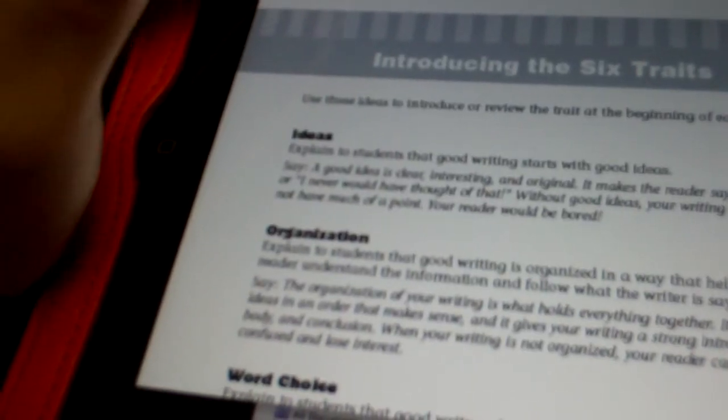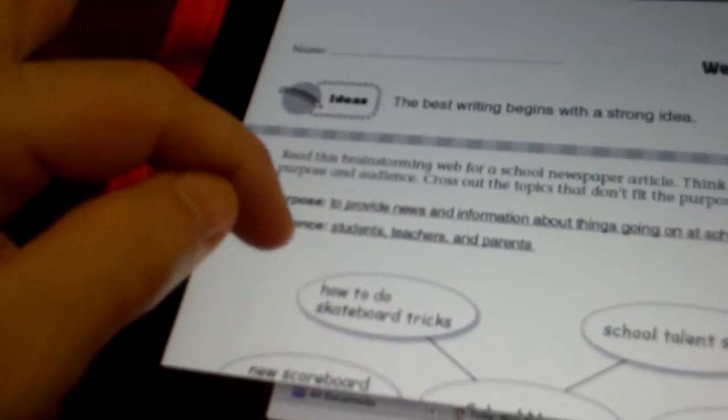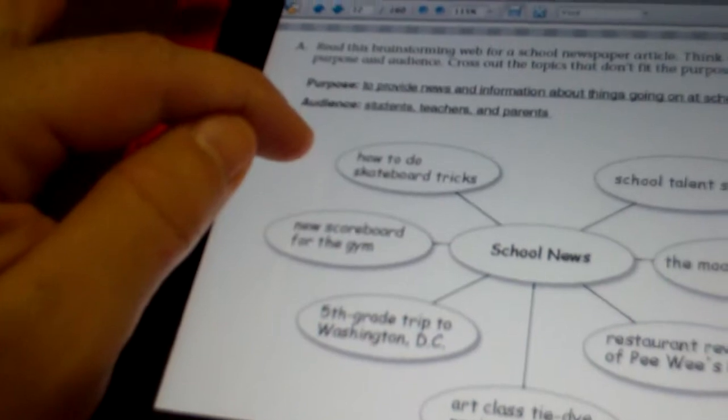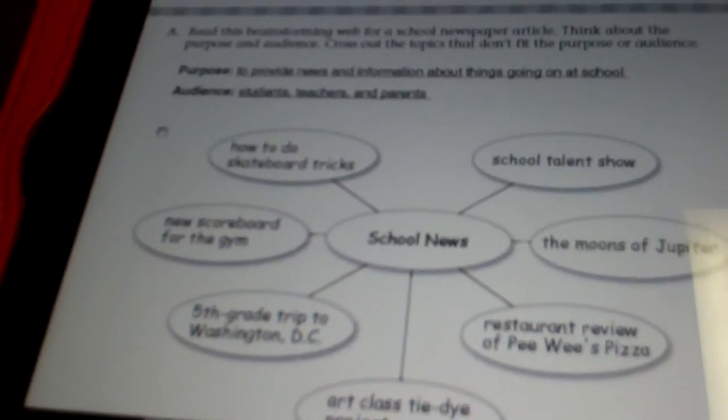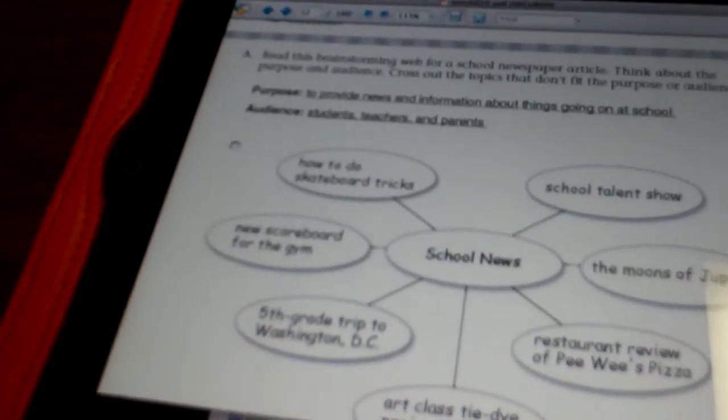If you were going to do an e-book in this classroom you could do it yourself but now you're walking around the room speaking to the class and with the class while you do these things and you can actually go ahead and hand off the iPad to a student in class. It says here to read this brainstorming web for an article on a school newspaper, think about the purpose in the audience and cross out the topics that don't fit.